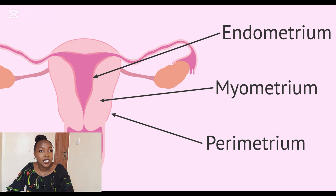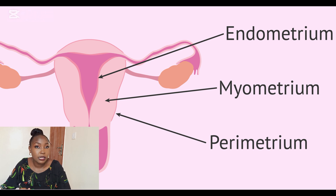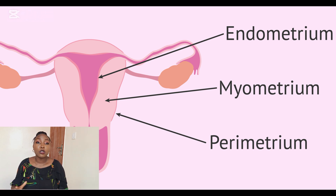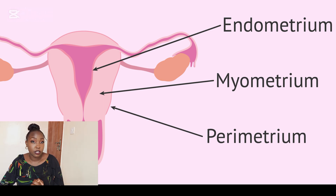The middle layer of the uterus is called the myometrium — the muscular layer and one of the strongest muscles in the body. It is able to expand to accommodate the fetus and contract to generate intense pressure to enable childbirth. It also contracts to enable the endometrium wall to shed during menstruation. The outer layer of the uterus is called the perimetrium, which provides structural protection.